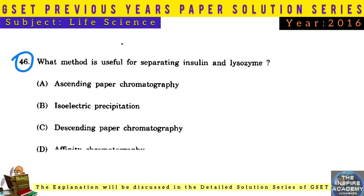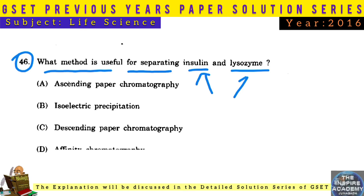Question No. 46: What method is useful for separating insulin and lysozyme? Remember, both are proteins. The method used to separate both of these is isoelectric precipitation.